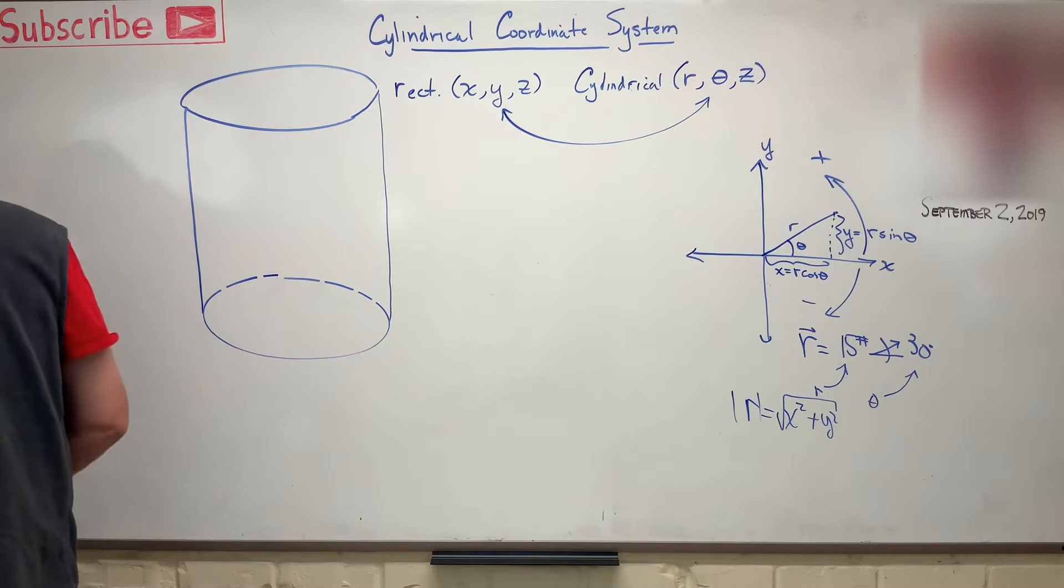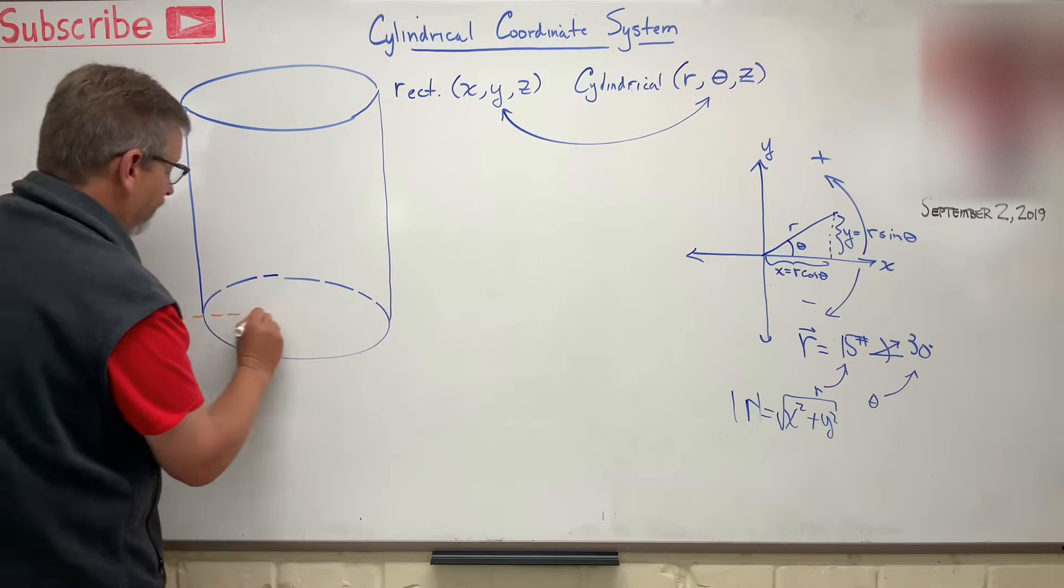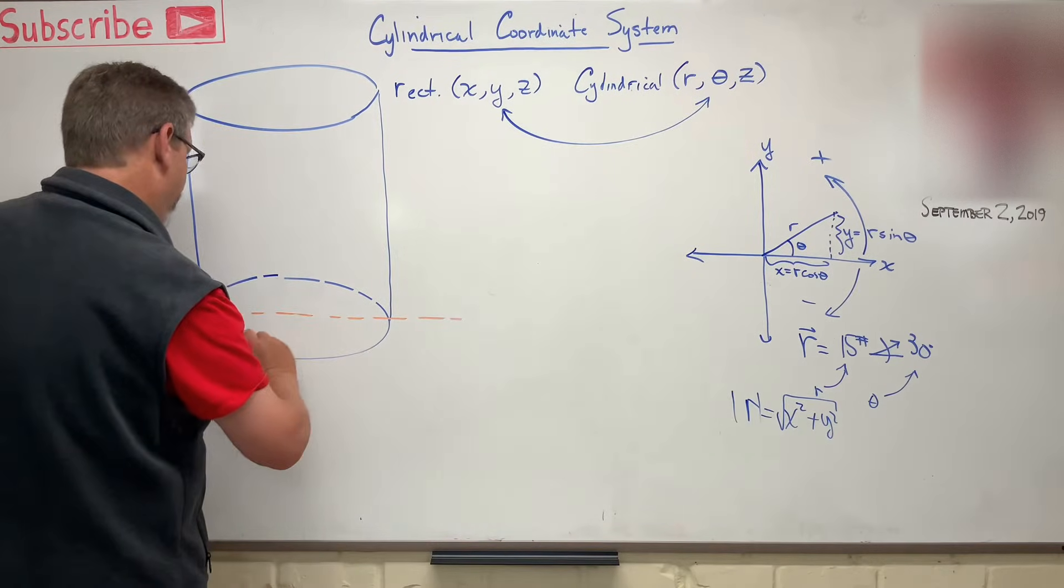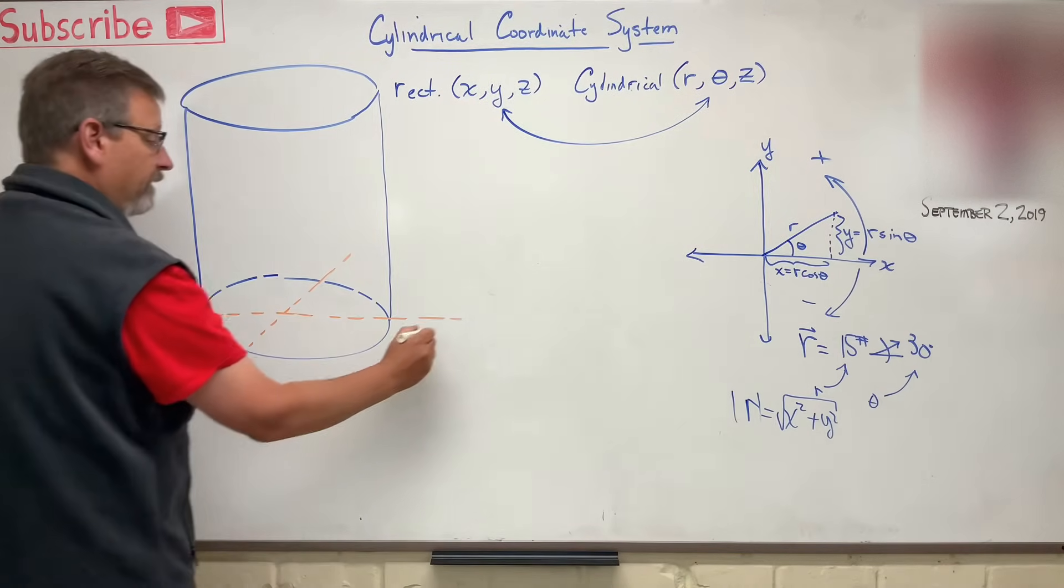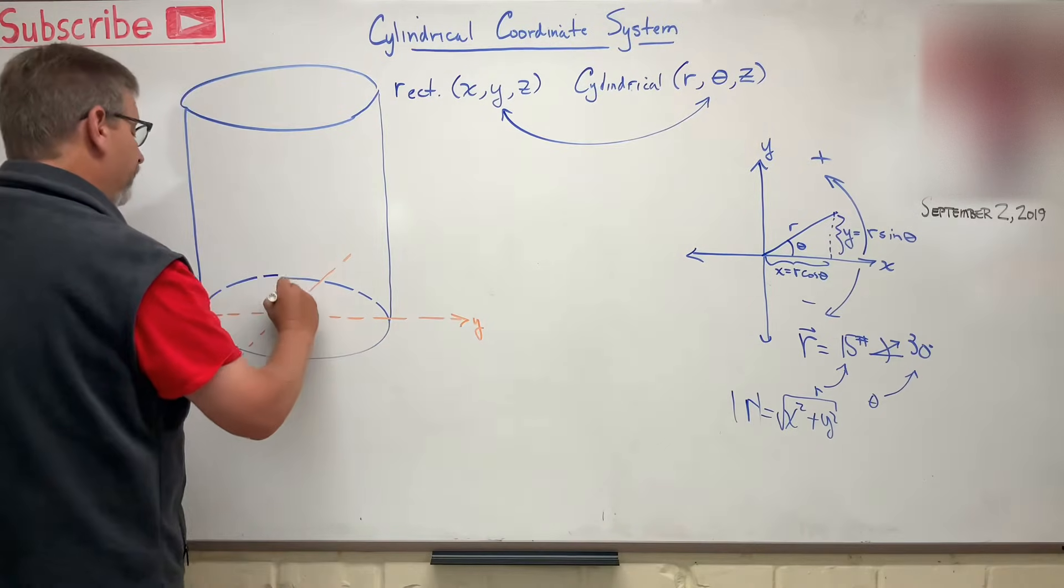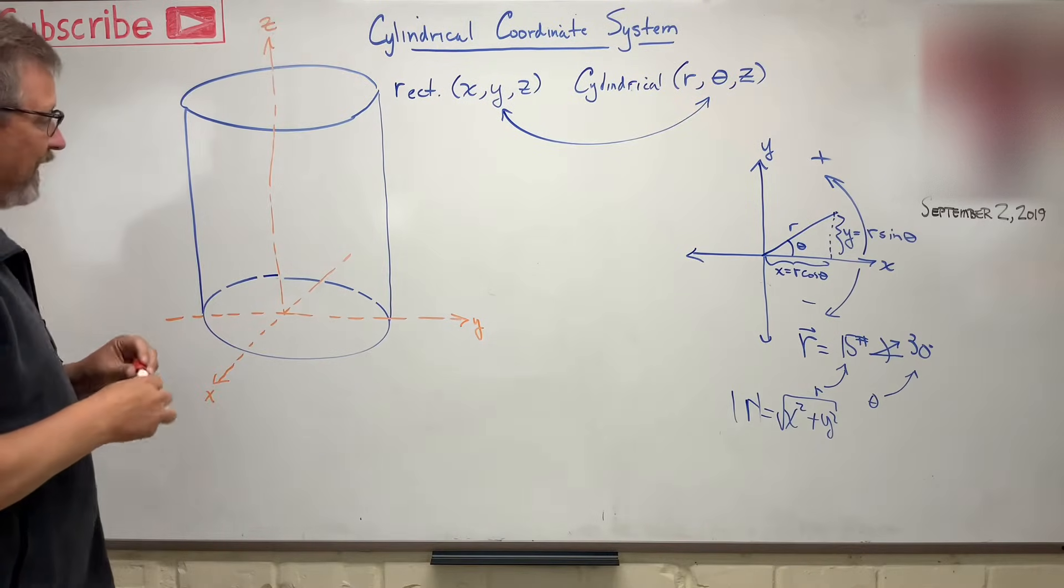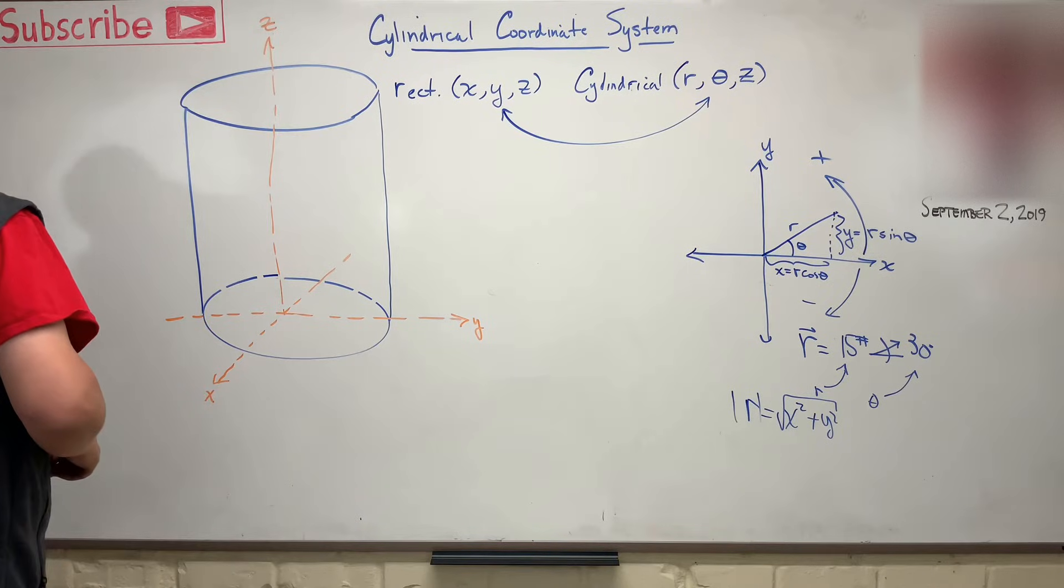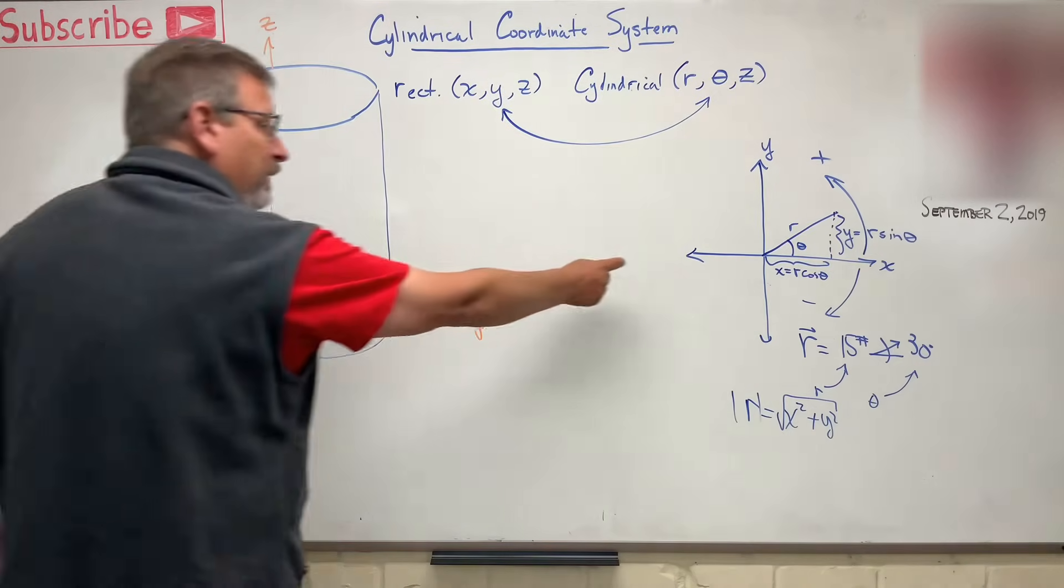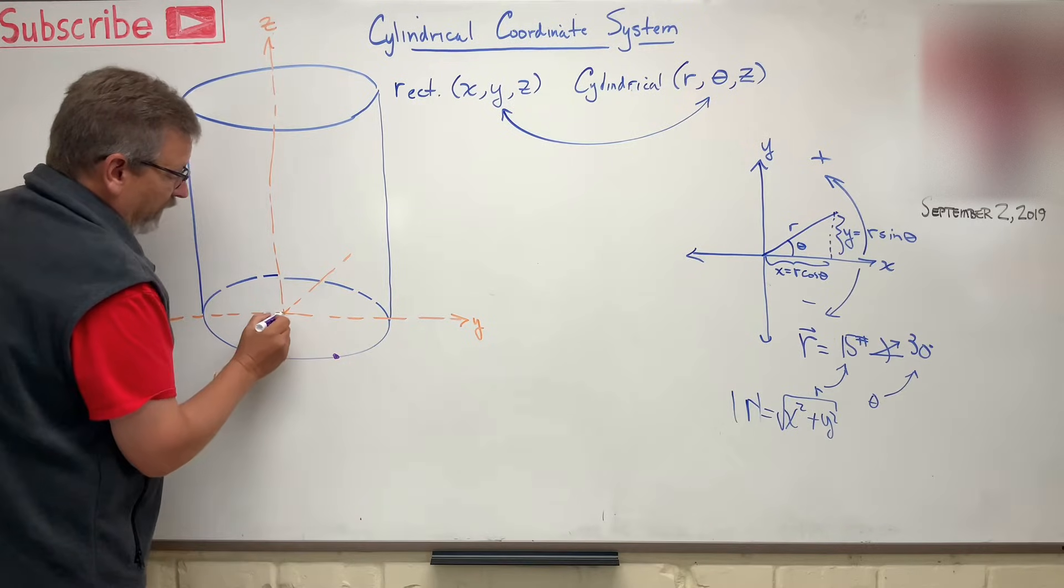And let me put the coordinate system on there. Here's our coordinate system, something like this. Let's say that this is x, here's y, and then here was our z, going right up to the middle there. So we have a cylinder, and on the bottom of that cylinder, down on the bottom there, in the xy plane, is just going to be our plane, a little polar guy here. So let's say that we had a point right here. Well, here we go.